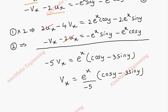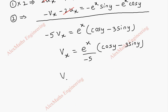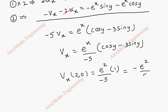We need vx(z, 0), which gives e^z divided by minus 5, times (cos 0 minus 3 sin 0). Since cos 0 is 1 and sin 0 is 0, this simplifies to minus e^z divided by 5.